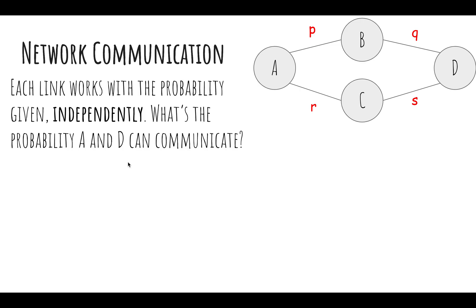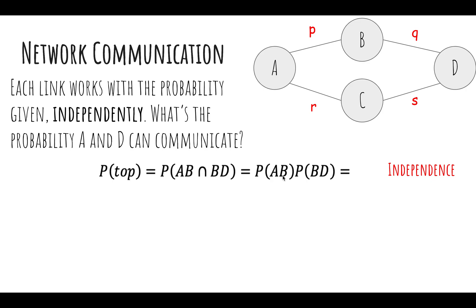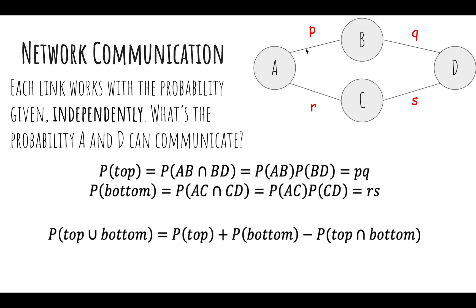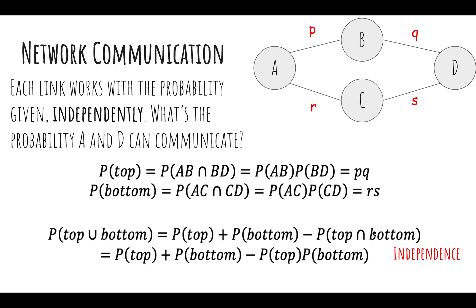Let's try an example. Each link works with a given probability independently. The probability of the top path working is P(AB works) × P(BD works), and by independence that's P × Q. Similarly, the probability of the bottom working is R × S by independence. What we want is the probability that the top works or the bottom works, so A and D can communicate. By inclusion-exclusion, that's P(top) + P(bottom) − P(top and bottom). Since top and bottom are independent, P(top and bottom) = PQ × RS. So the final probability is PQ + RS − PQRS.